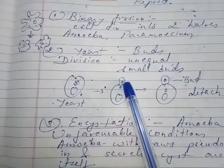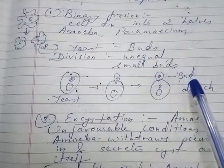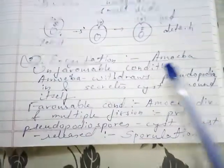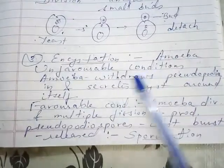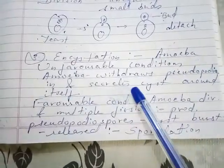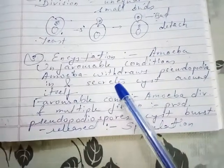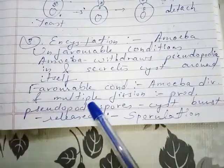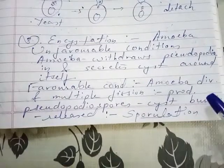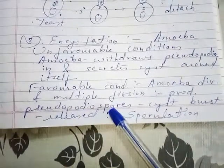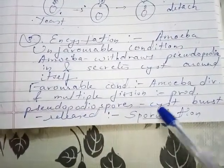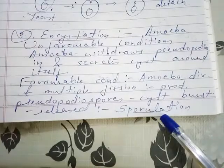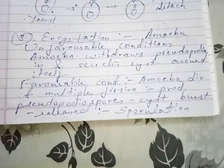In yeast, a small bud forms on the parent cell, detaches from it, and grows as a new organism. Encystation is seen in amoeba — during unfavorable conditions, amoeba withdraws its pseudopodia and secretes a cyst around itself. When favorable conditions return, amoeba divides through multiple fission and produces pseudopodiospores. When the cyst breaks, it releases all pseudopodiospores — this is called sporulation — and new amoeba come into existence.